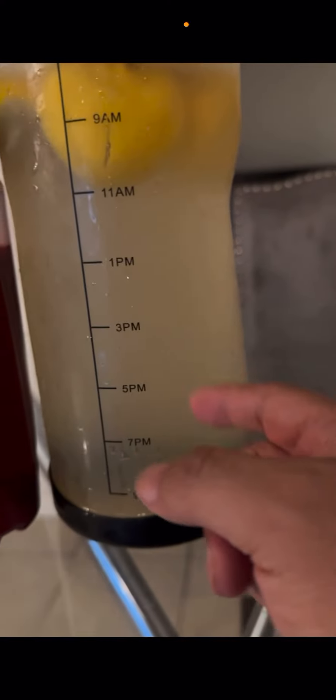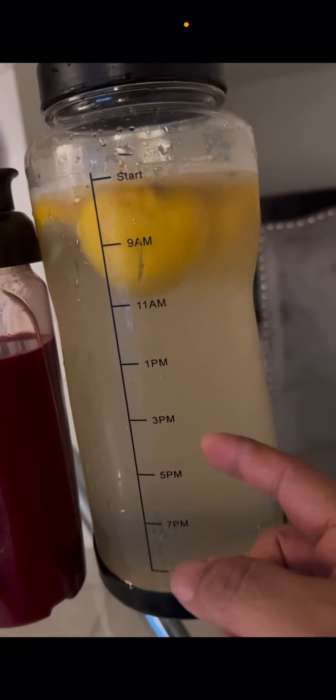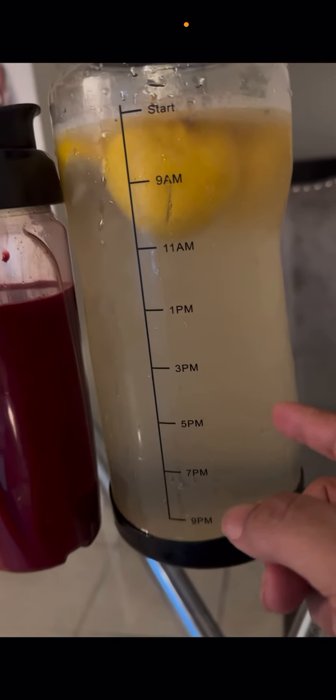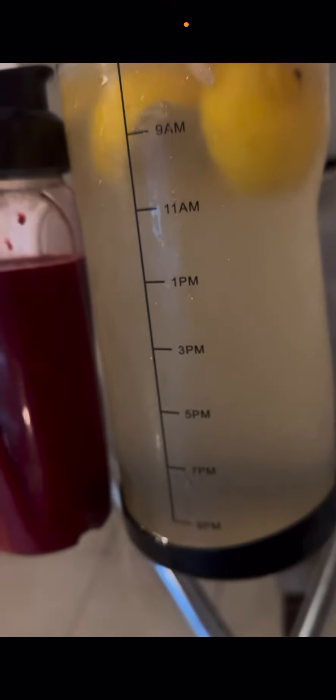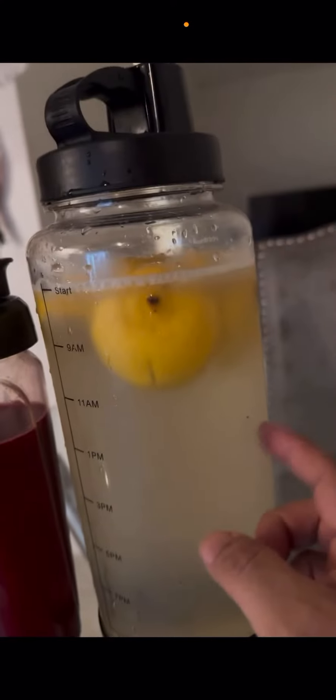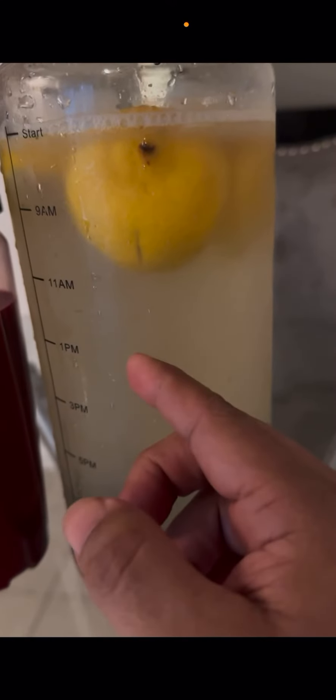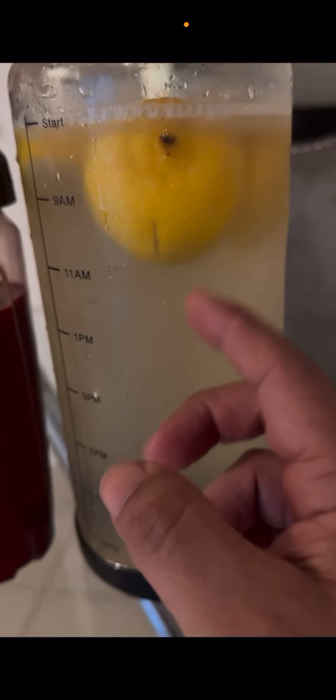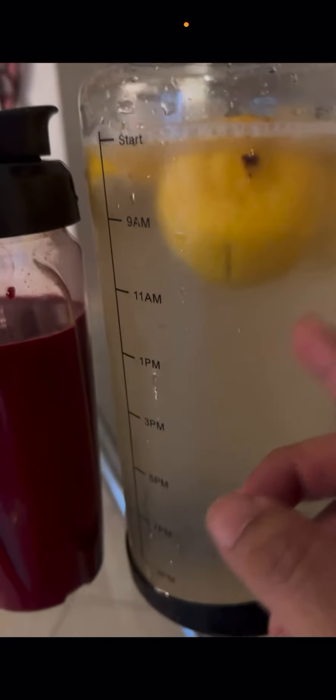What I got here was, I think this is 64 ounces. Yeah, I think it is 64, 36, I forgot, but this is how much water you should be drinking a day. I got apple cider vinegar, a little Himalayan salt, and lemon. I squeeze the juice out of the lemon, put the peels in there, let it sit overnight.